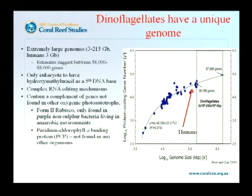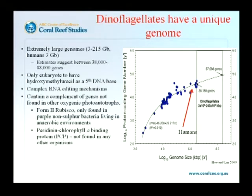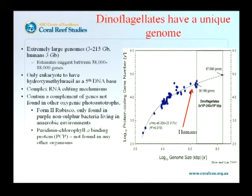So if we want to start utilising a genomic approach to symbiodinium, we have to start finding out what's actually in the genome. Complicating the fact, not only do we not know a lot about it, they're actually very strange beasts. The genome itself is very large — anywhere between 3 billion base pairs and 215 billion base pairs. To put that in context, the human genome is about 3 billion base pairs. So I'm lucky enough to work on an organism that has a genome at least as complex as humans, all in a single cell, and we've got no idea what all this genomic information is doing.